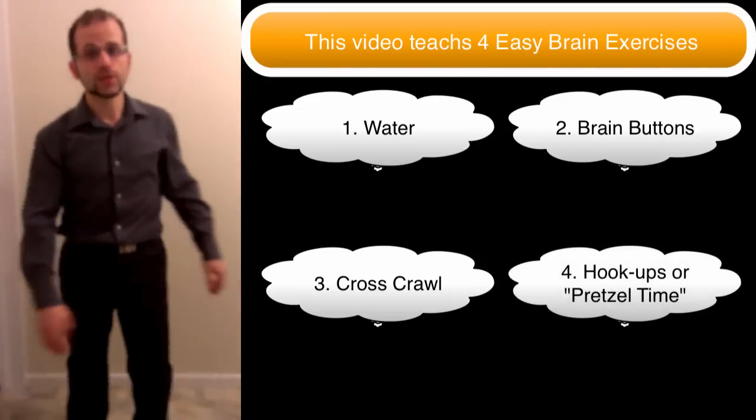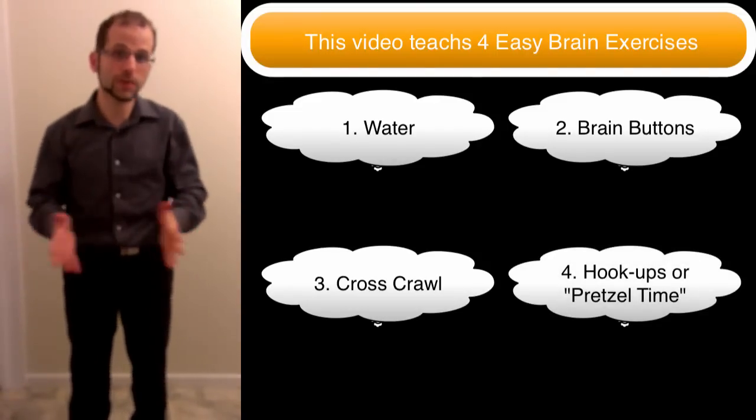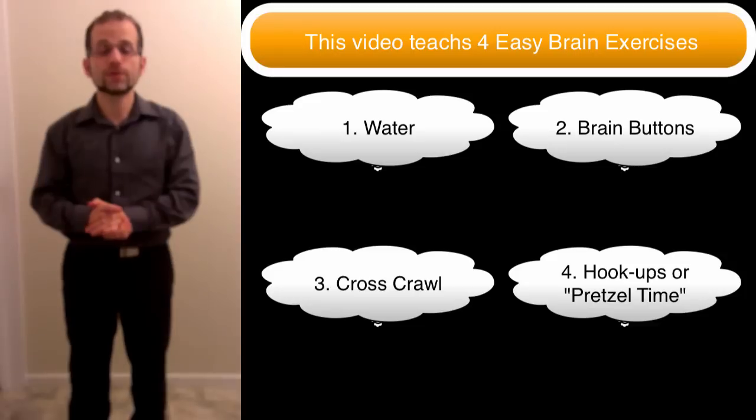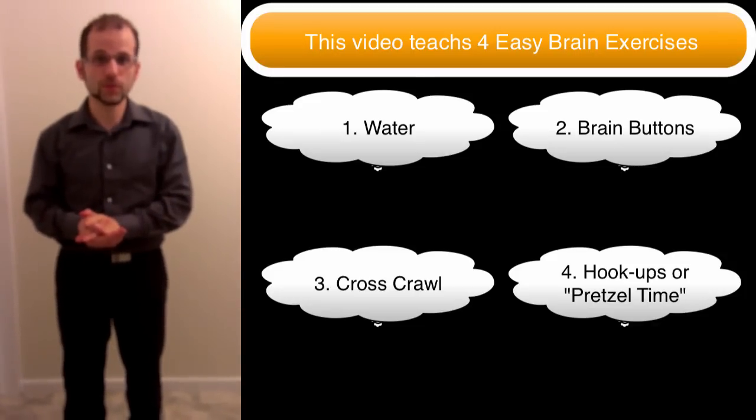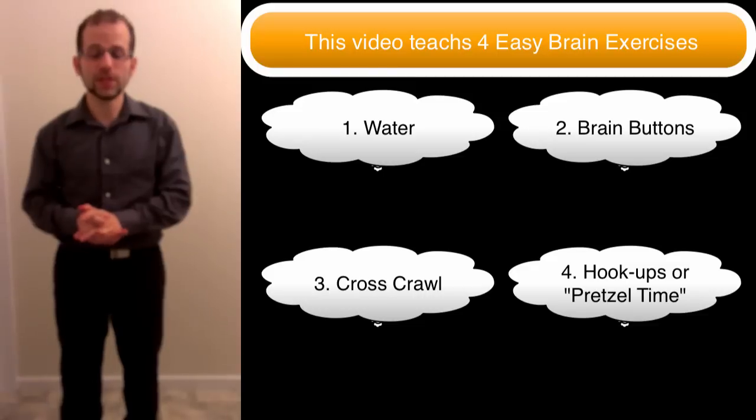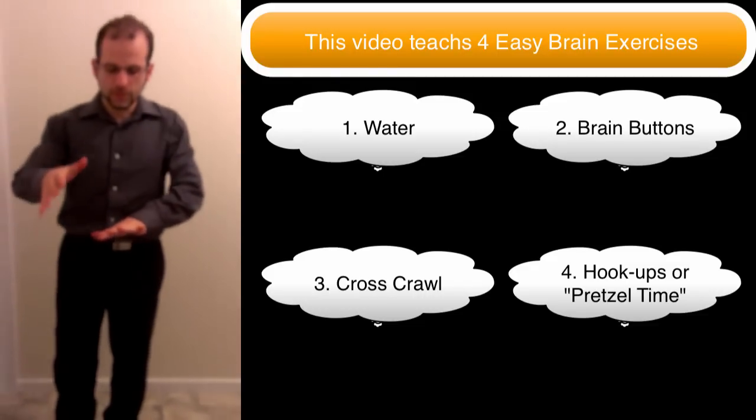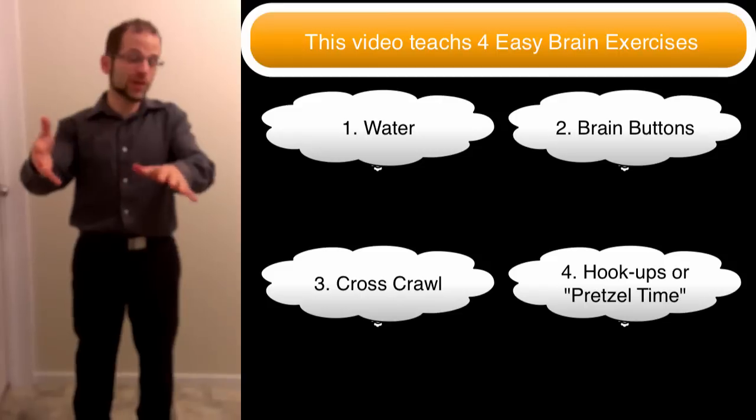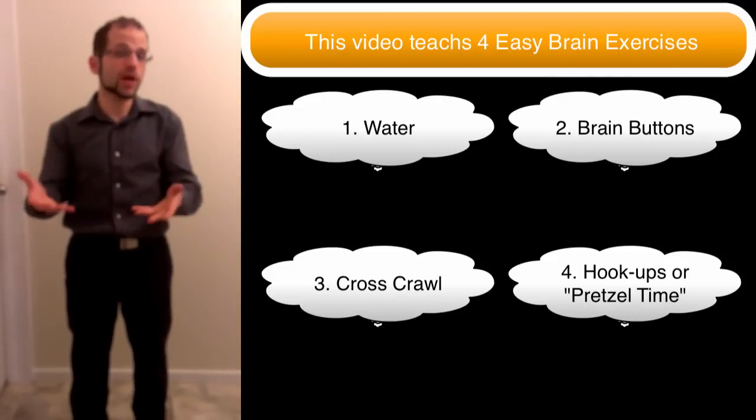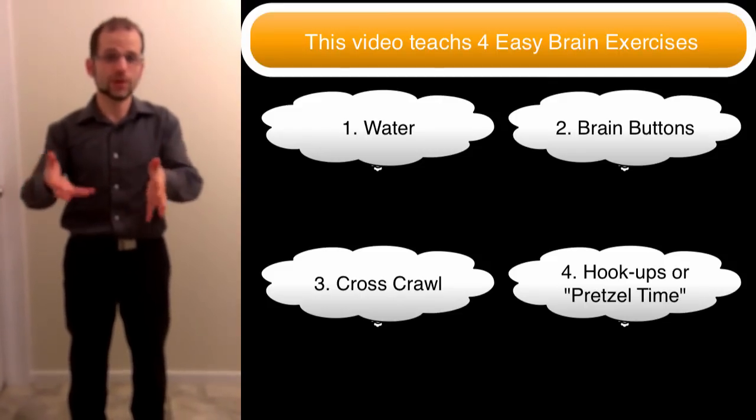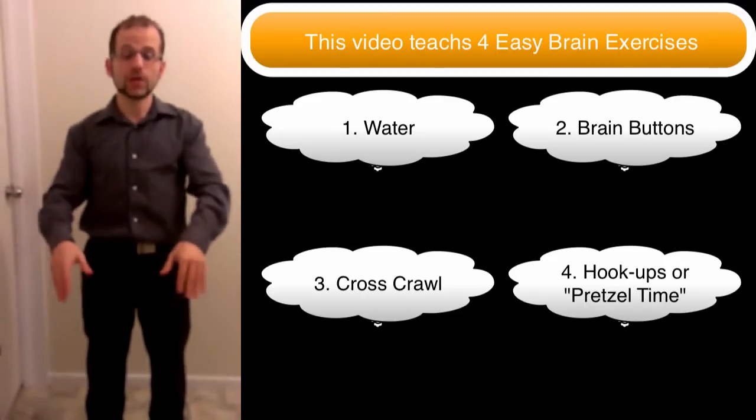The fourth activity is called hookups or cook's hookups. And I prefer to call it pretzel time, as one of my brain gym instructors, Celia, mentioned. And so this is called pretzel time because you look like a pretzel. And it's a great way to describe it to kids. If you say, we're going to pretzel time, they get it. So how do you do pretzel time?